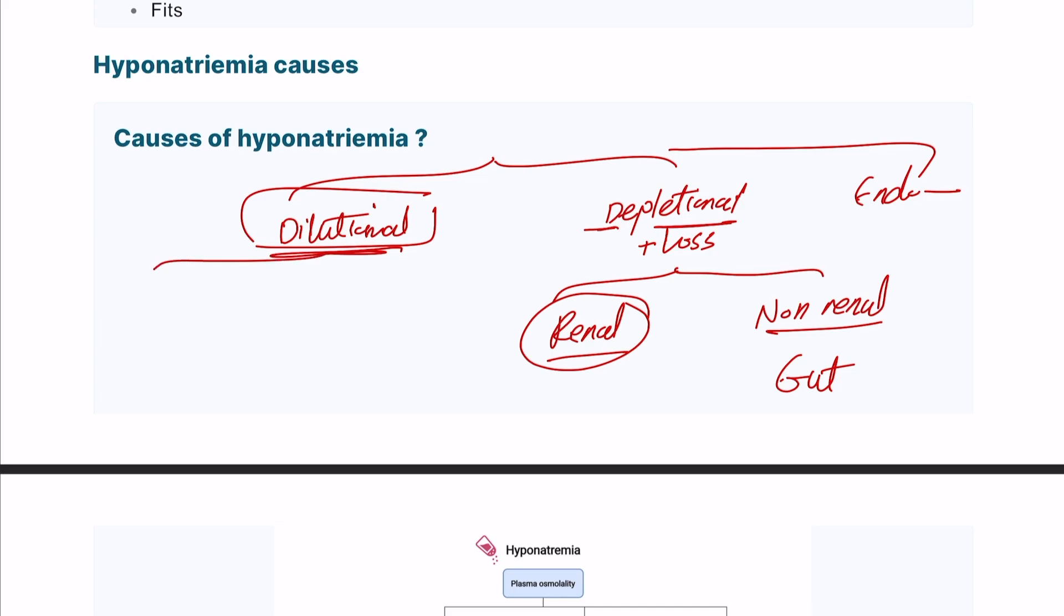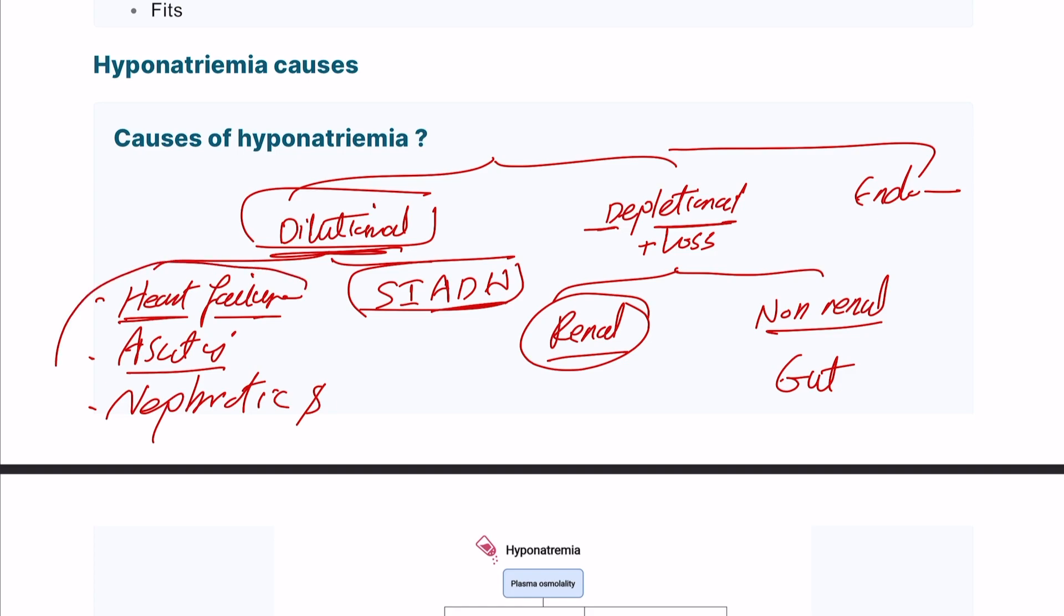Dilutional hyponatremia is due to accumulation of large amounts of water. This can happen in conditions with fluid overload like heart failure, ascites due to liver failure, and kidney failure due to nephrotic syndrome. There's also syndrome of inappropriate ADH secretion due to production of antidiuretic hormone, leading to increased water and dilutional hyponatremia.